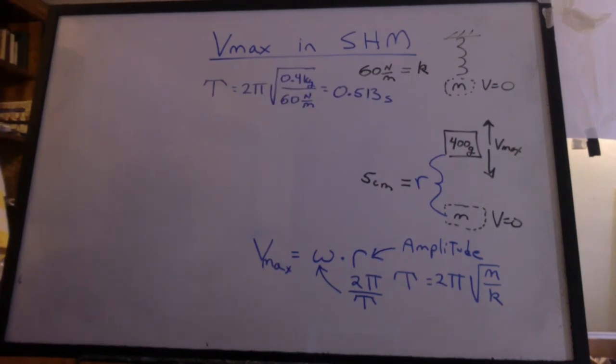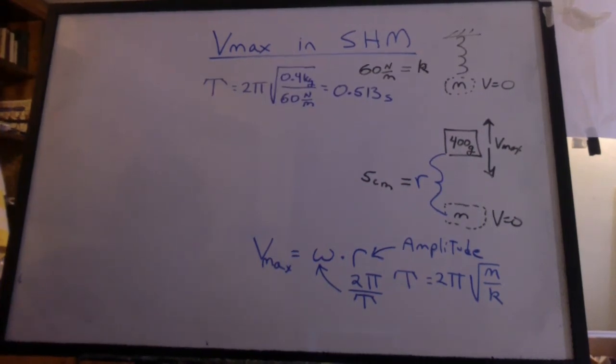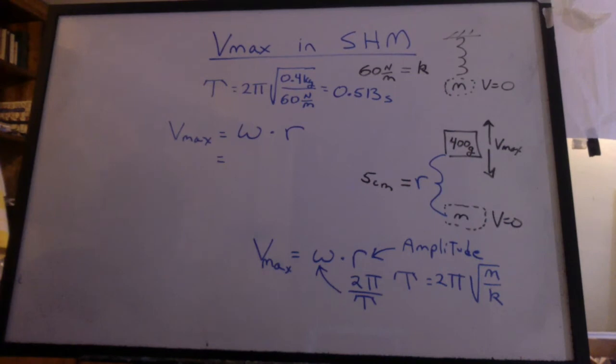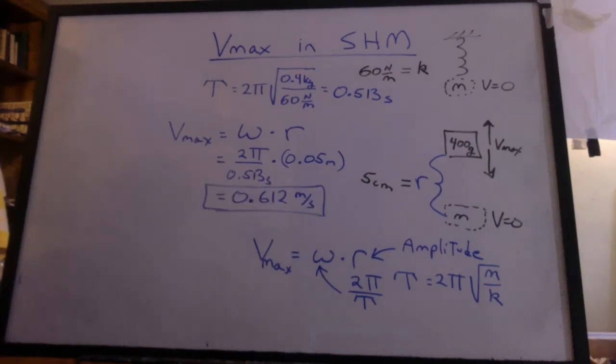I get a period of 0.513 seconds. We can now go to Vmax equals omega times r, plug in the data, and we get 0.612 meters per second.